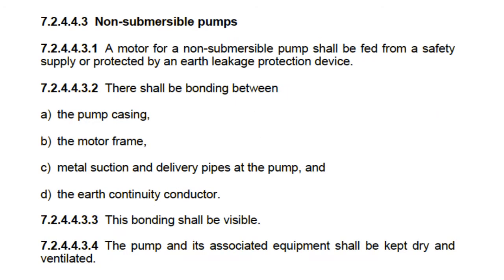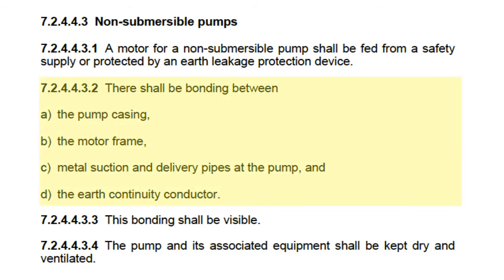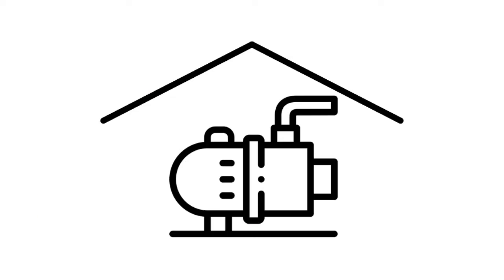Next, the code speaks specifically about water pumps. For our purposes we are interested in clause 7.2.4.4.3: non-submersible pumps. Firstly, a motor for a non-submersible pump shall be fed from a safety supply or protected by an earth leakage protection device. Secondly, there shall be bonding between the pump casing, the motor frame, metal suction and delivery pipes at the pump, and the earth continuity conductor. In other words, all components that could conduct electricity must be connected or bonded to earth, this bonding must be visible, and the pump and its associated equipment must be kept dry and ventilated — meaning we would probably need to put the pump under some sort of small roof.